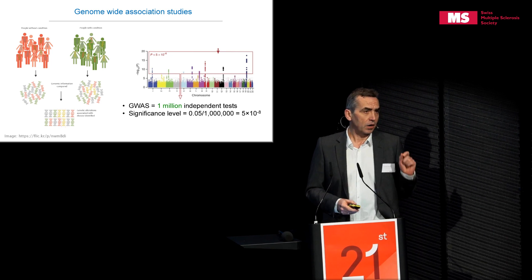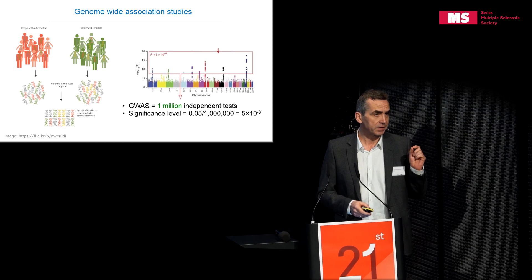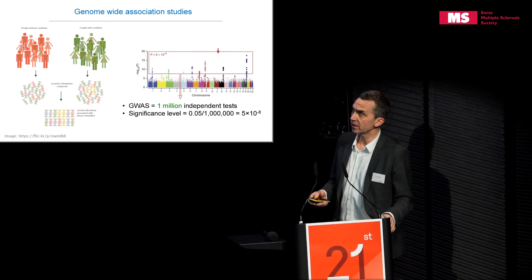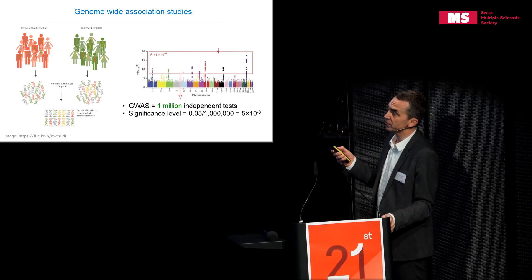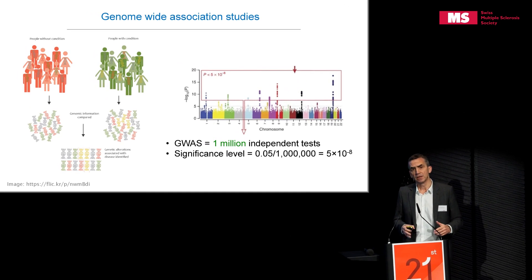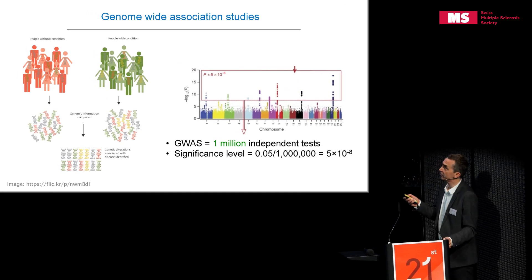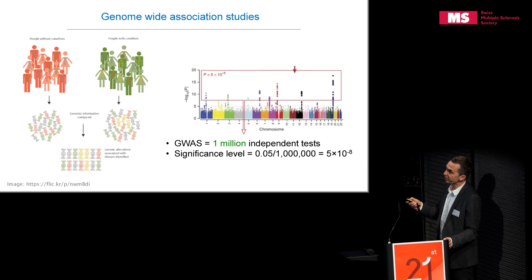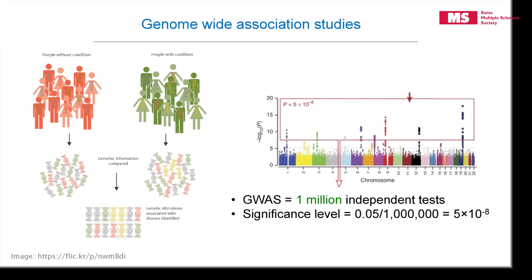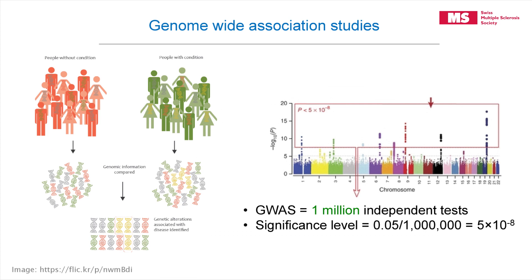Advances in genetic studies also came from advances in how the studies were done. One major advance was genome-wide association studies, which brought new data into the MS field. How are they done? You take a group of people who have a certain condition — for example, MS — and compare them to a group who don't have it. You do genotyping, determine all the genetic factors in the genome, and then compare and analyze in which parts of the genome the patients and controls differ. That is a genome-wide association study.